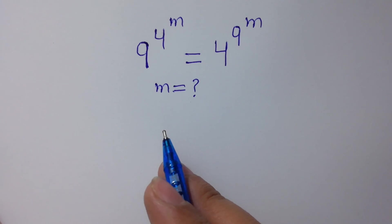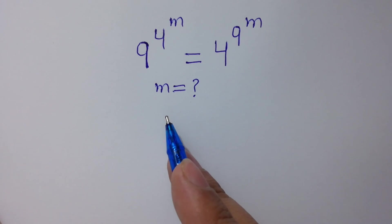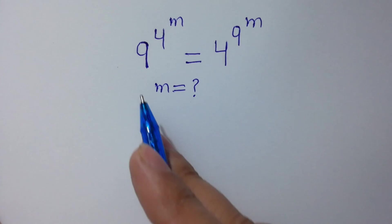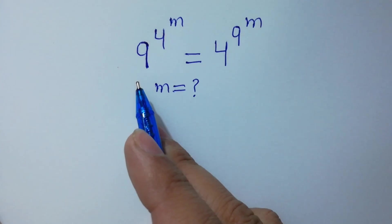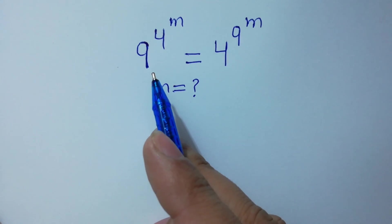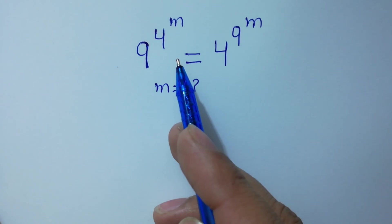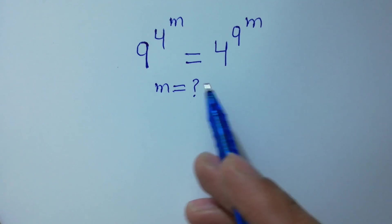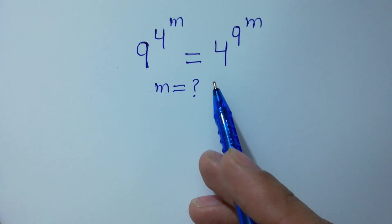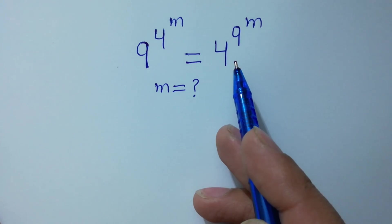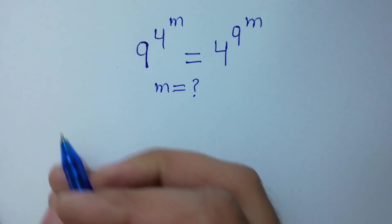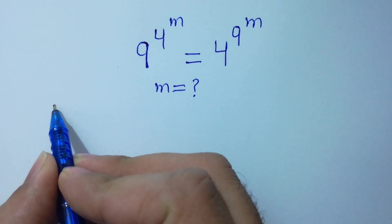Hello friends. Find the value of m if 9 to the power 4 to the power m equal to 4 to the power 9 to the power m. Let's have a solution here.